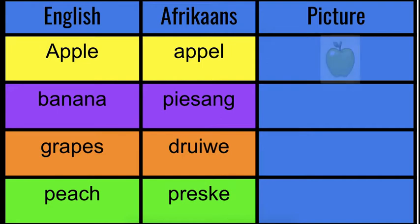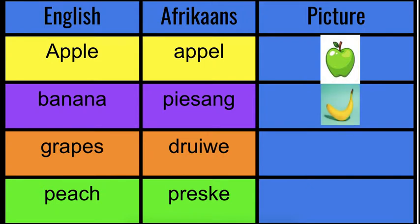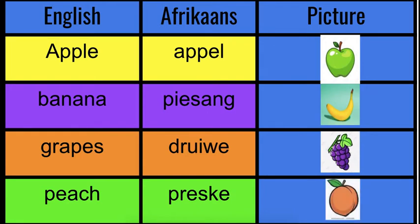Apple. Pisang — banana. Druiwe — grapes. Perske — peach. Okay, now you say it with me: apple, pisang, druiwe, perske.